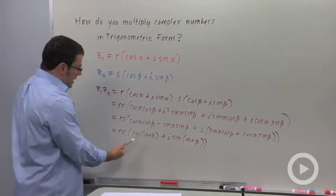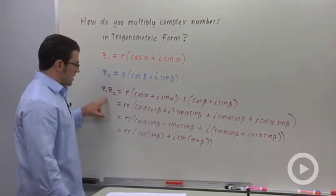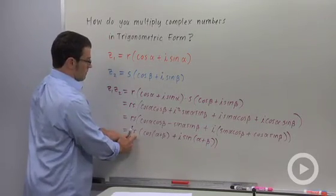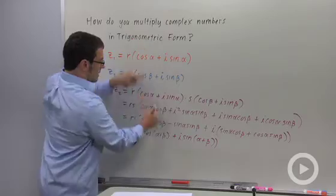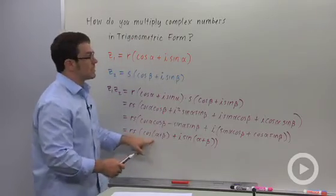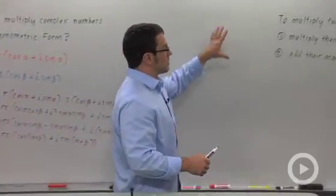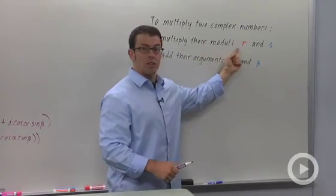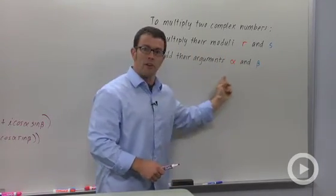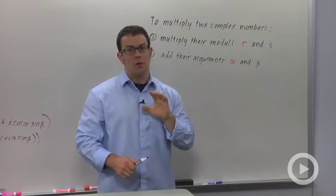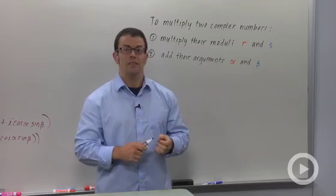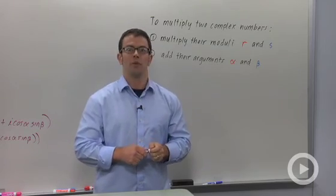So this is actually how you multiply two complex numbers in trig form. You take their moduli and you multiply them. You take their arguments and you add them. It's as simple as that. So to multiply two complex numbers, multiply their moduli and add their arguments. This is one of the reasons that we like trigonometric form. It's much easier to multiply and divide in trig form than in rectangular form.